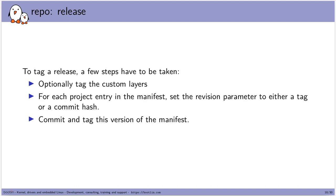That setup script will source oe-init-build-env and also set up local.conf and bblayers.conf if they don't exist yet. To tag a release, you optionally tag your custom layers, then for each project entry in the manifest you set the revision parameter to either a tag or a specific commit hash, and finally commit and tag that version of the manifest. This ensures that a tagged manifest will always download the exact same sources.